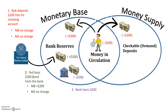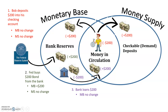A third scenario is that a bank loans $200. It takes the $200 it has and puts that money into circulation. The monetary base doesn't change, because the money went from excess reserves to being in circulation. However, there is an increase in the money supply because the money went from bank reserves to circulation — so the money supply has increased by $200.